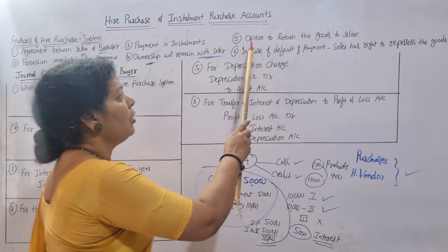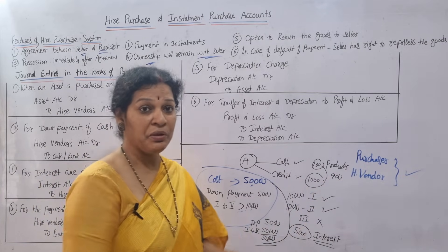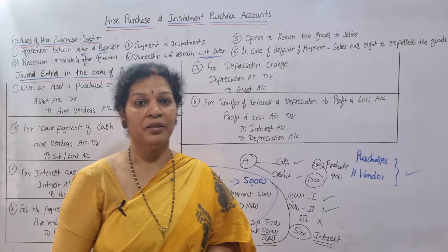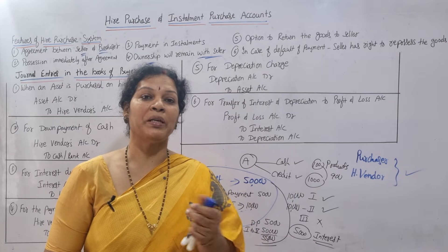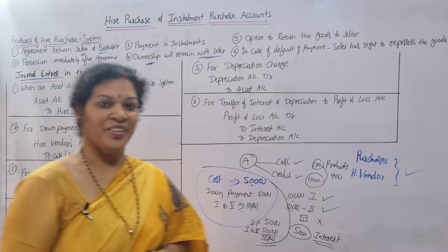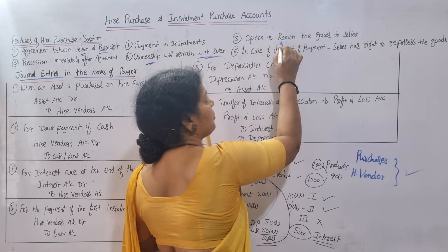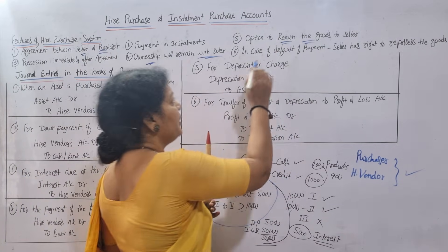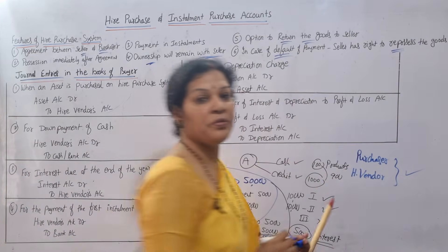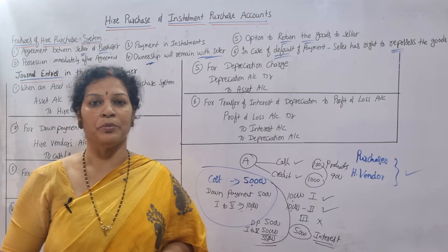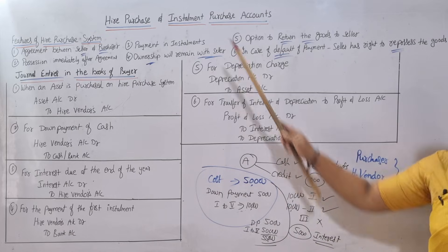The seller retains ownership until the last payment is made, because if you don't pay, the seller has the right to take back the asset. Fifth feature: there is an option to return the goods to the seller — after making some installments, if you don't like the product, you can return it. Sixth: in case of default of payment, the seller has the full right to repossess the goods. These are the main features of the Hire Purchase System.